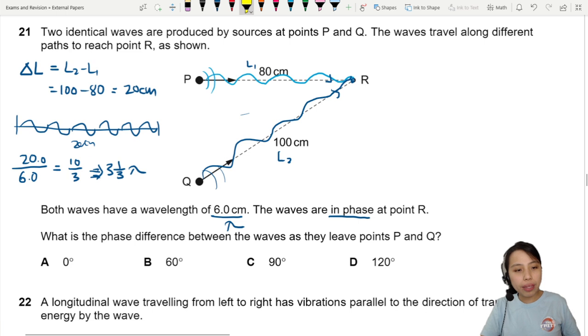So that means the path difference is 3 and 1 third. The important part to focus on is 1 third of a wavelength. Is it destructive or constructive? Normally, it's neither. It's not constructive, not destructive.